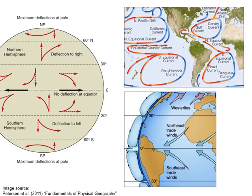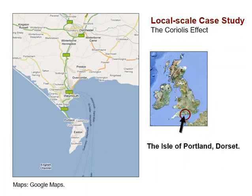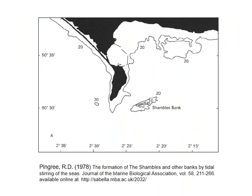These global effects are well known and very important. Now one of the themes we focus on in this module — and some of you watching will be doing the patchwork assessment on how large-scale effects have small-scale impacts — is how major global processes such as the Coriolis effect can have local impact. I want to give you a nice local case study of the Coriolis effect based around the Isle of Portland in southern England.